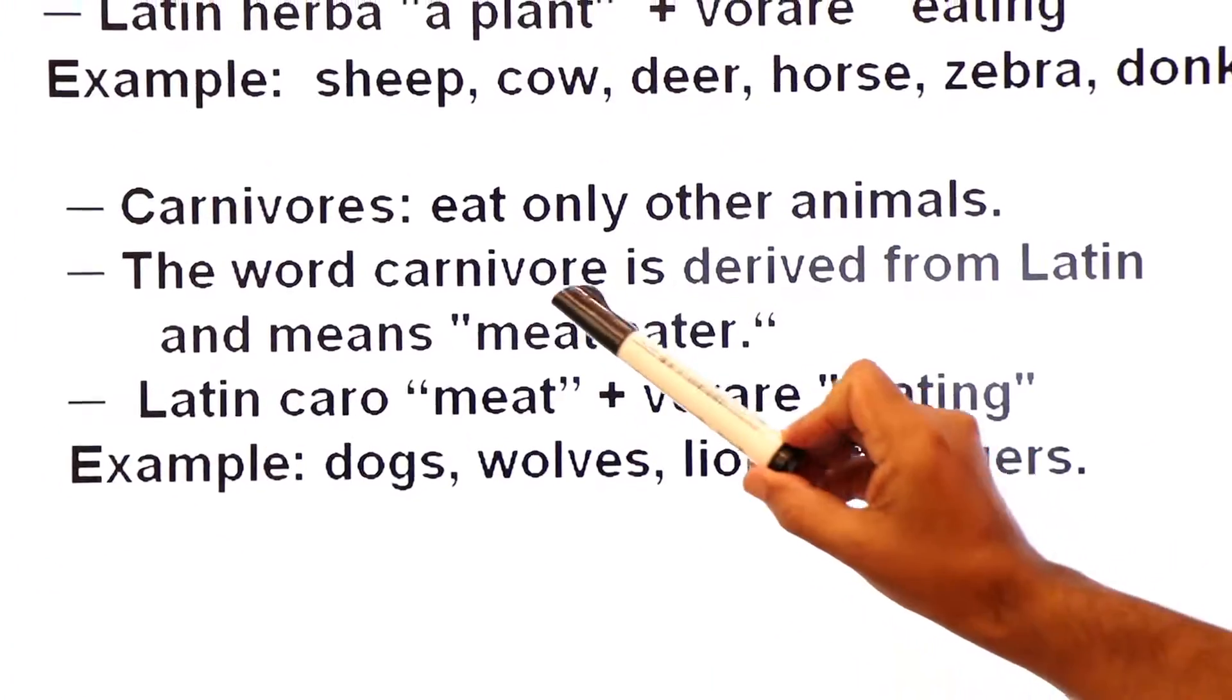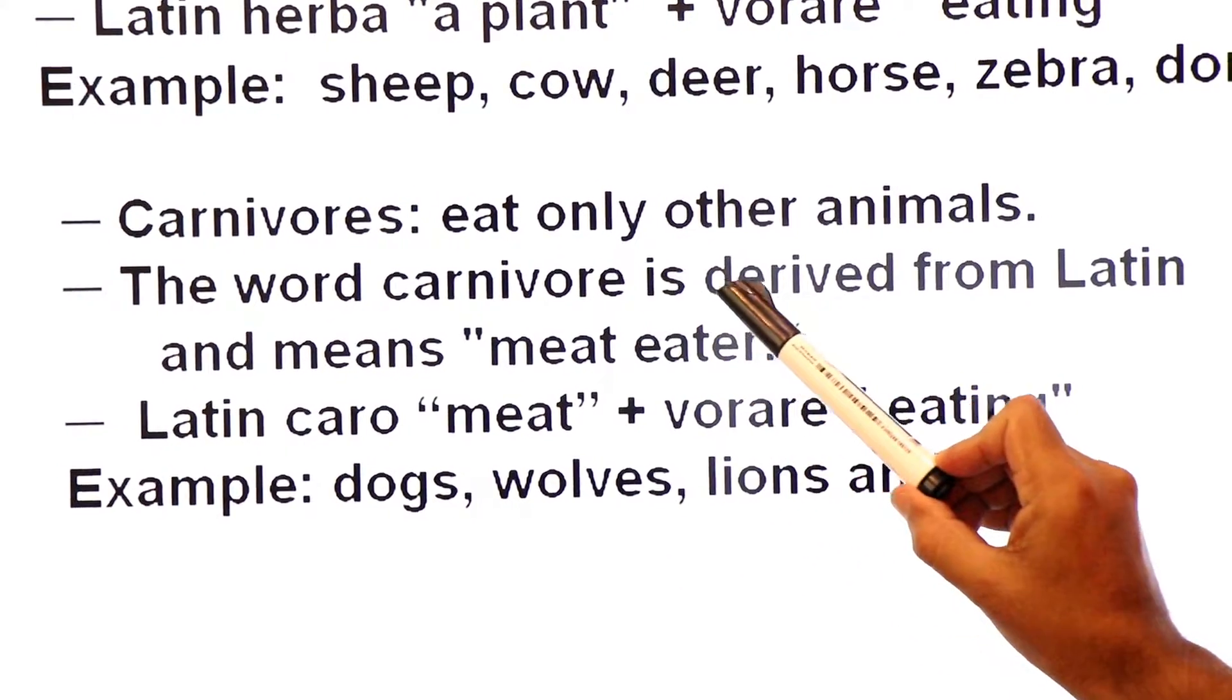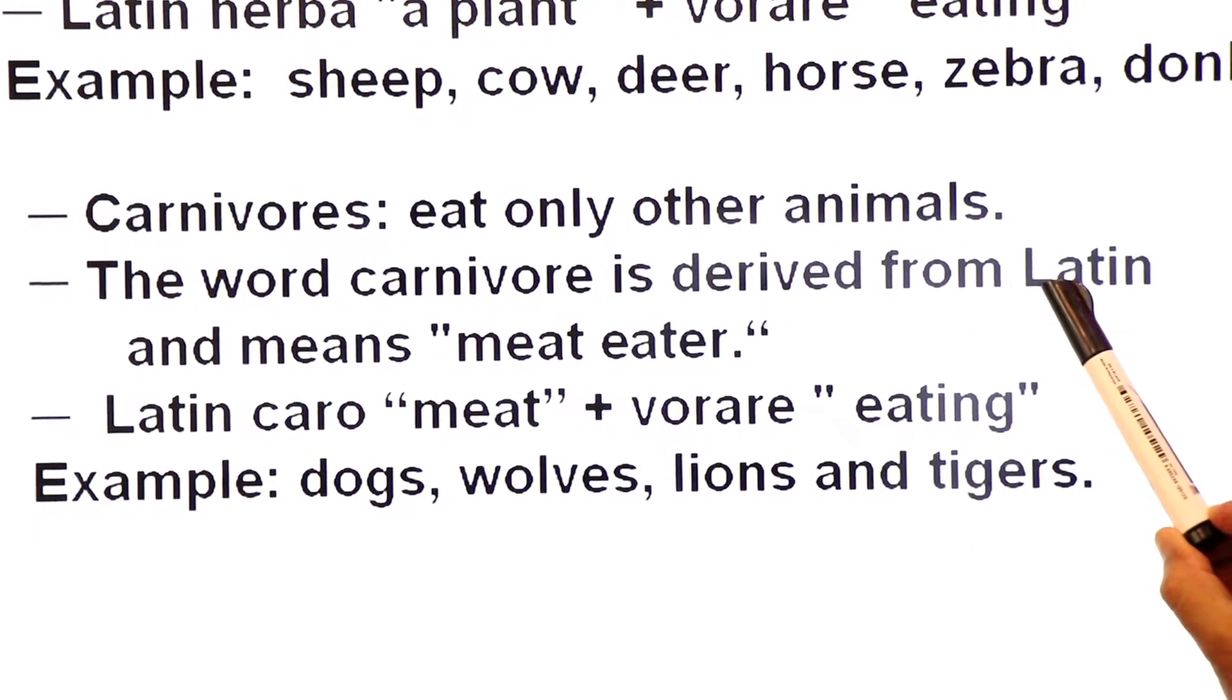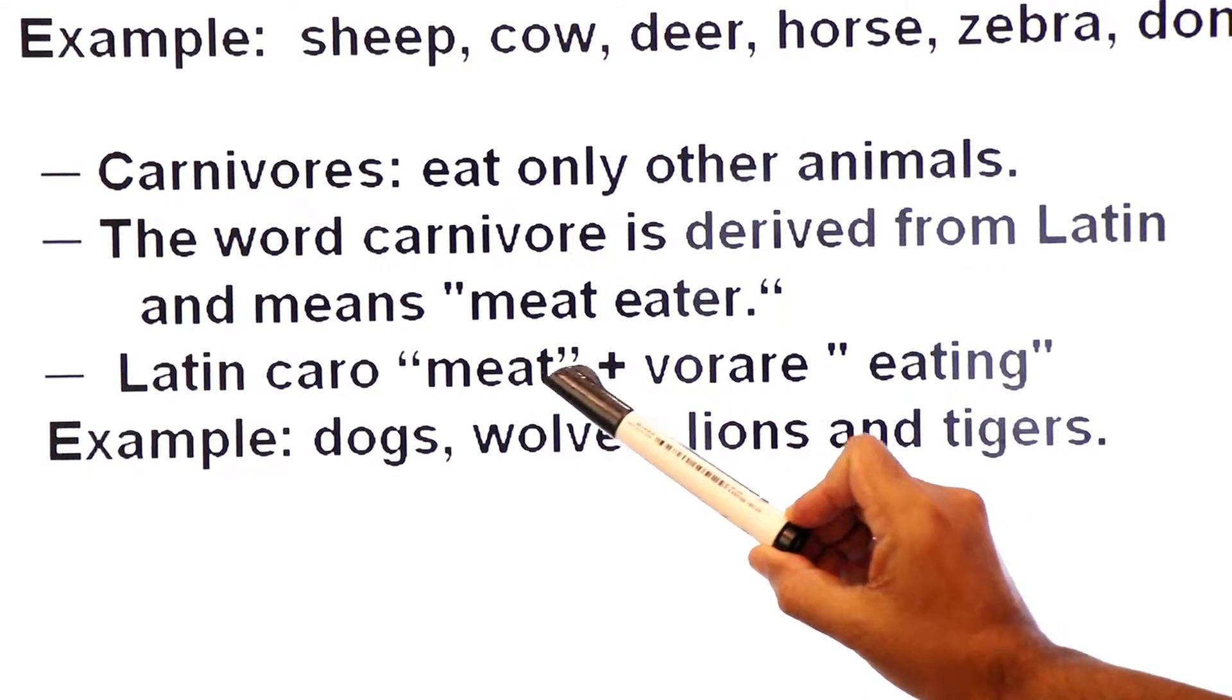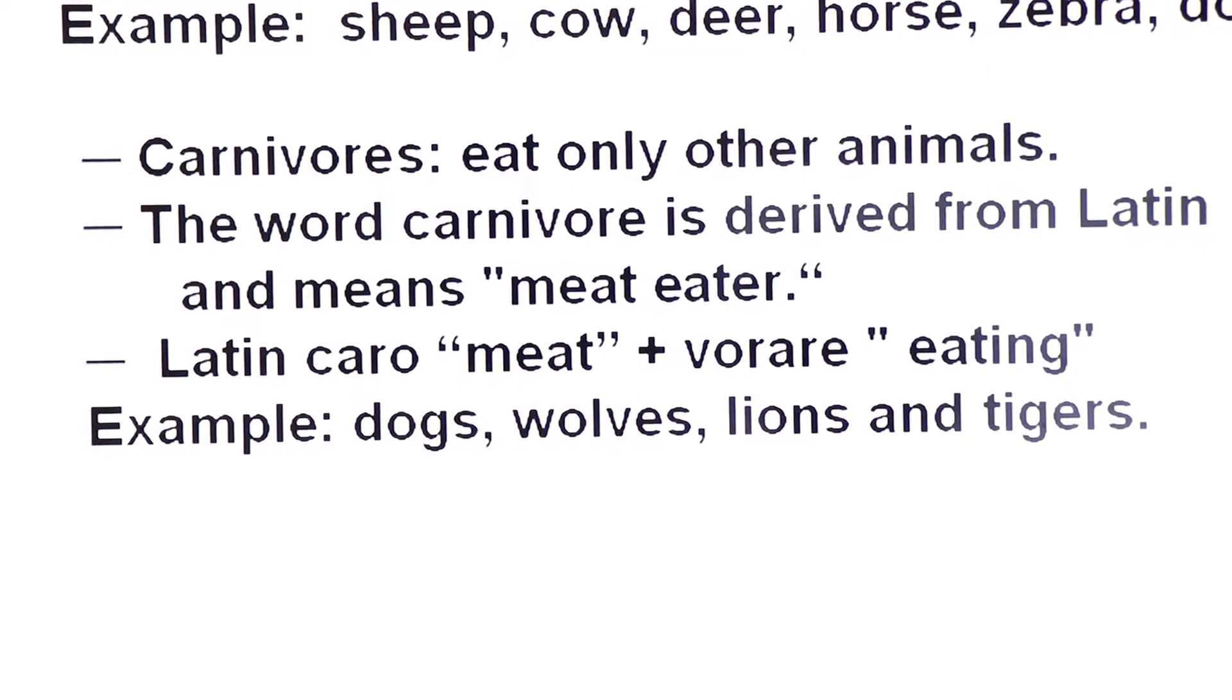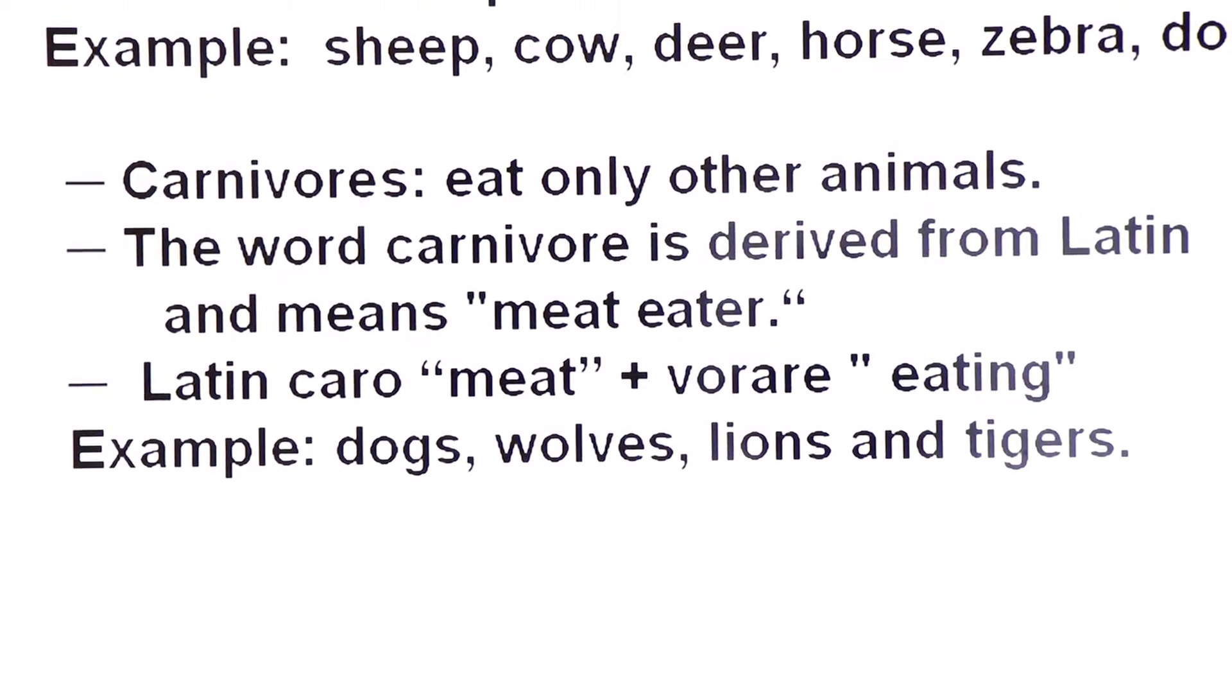Carnivores are the animals that eat only other animals. The word carnivore is derived from Latin language and means meat eater. Latin caro means meat plus vorare means eating. Examples of carnivores: dogs, wolves, lions and tigers.